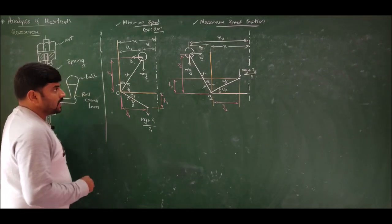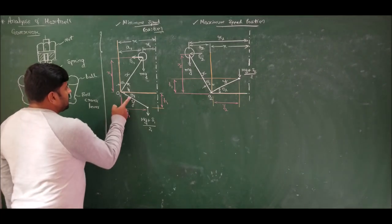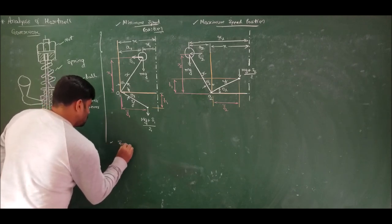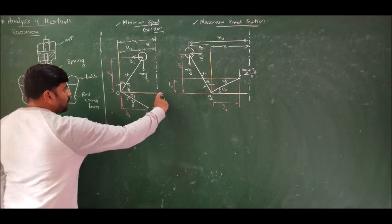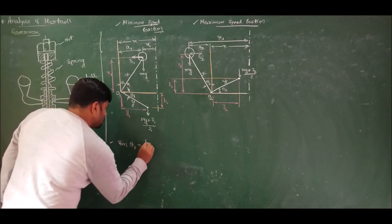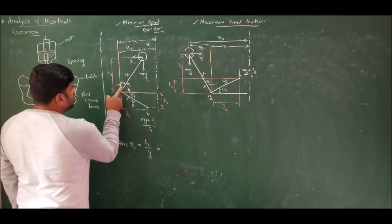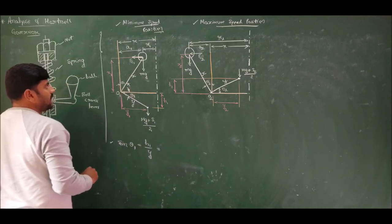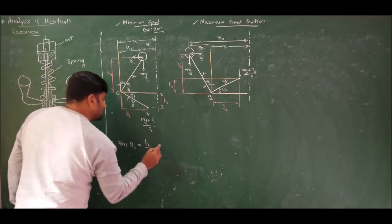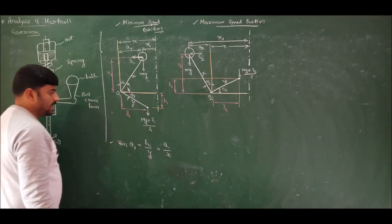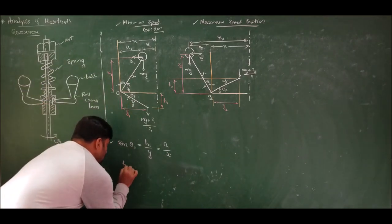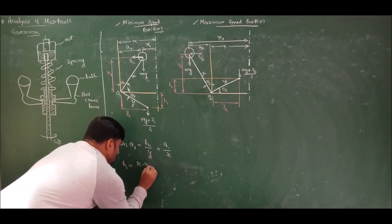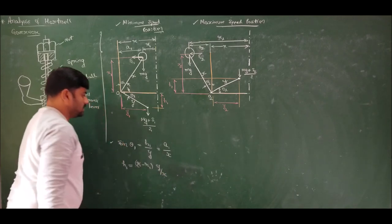Now let us derive the expression for spring stiffness. Taking sine theta 1: sine theta 1 equals h1 over y (opposite over hypotenuse), and also equals a1 over x. Therefore h1 equals a1 times y over x, and since a1 equals r minus r1, we get h1 equals (r minus r1) times y over x.